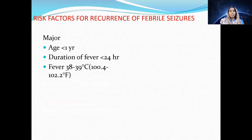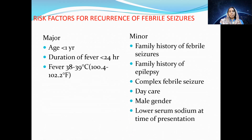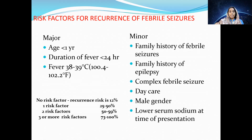Risk factors for recurrence include major risk factors: age less than one year, duration of fever less than 24 hours, and fever between 38–39 degrees Celsius. Minor risk factors include family history of febrile seizures, family history of epilepsy, complex febrile seizures, daycare attendance, male gender, and low sodium at presentation. With no risk factors the recurrence rate is 12%; one risk factor: 25–50%; two risk factors: 50–59%; three or more: 73–100%.